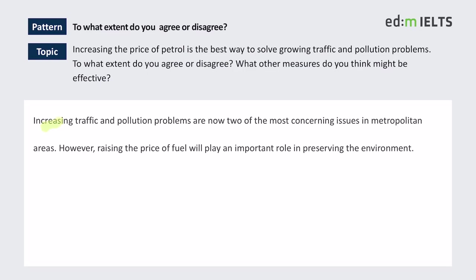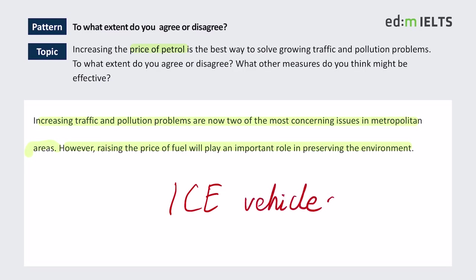The introduction reads: 'Increasing traffic and pollution problems are now two of the most concerning issues in metropolitan areas. However, raising the price of fuel will play an important role in preserving the environment.' It addresses the question pretty well. 'Petrol' is what British people say; Americans say 'gas', which is gasoline. But it's fuel for vehicles — specifically, internal combustion engine vehicles, the ones with vehicle emissions. I'd say that problems don't increase, they get worse. 'Get worse' is too informal, so I'd use 'worsen' or 'deteriorate': worsening or deteriorating problems. 'Metropolitan' — nice word.